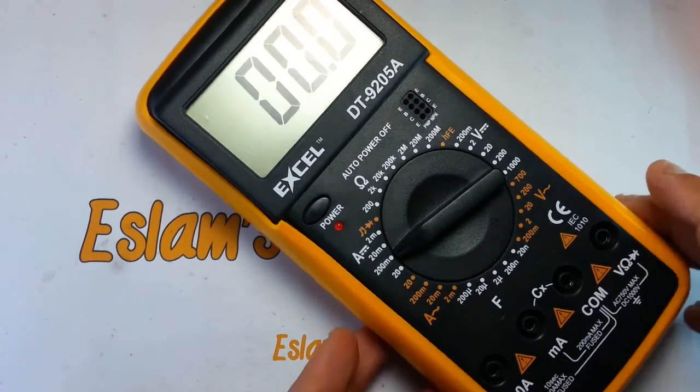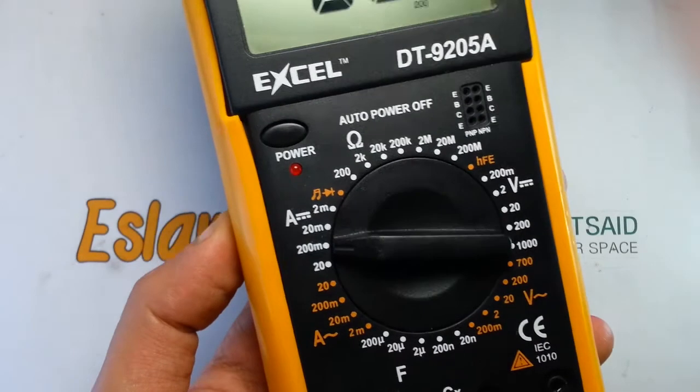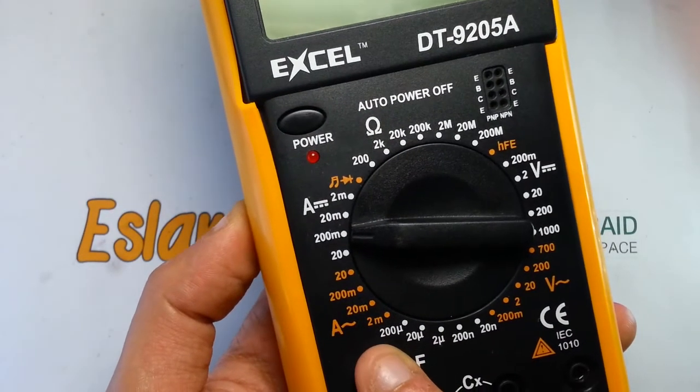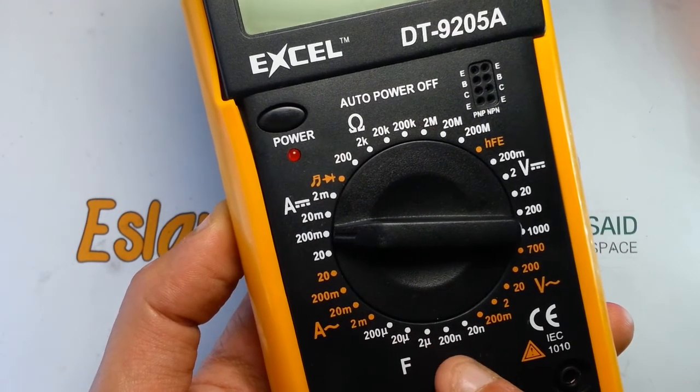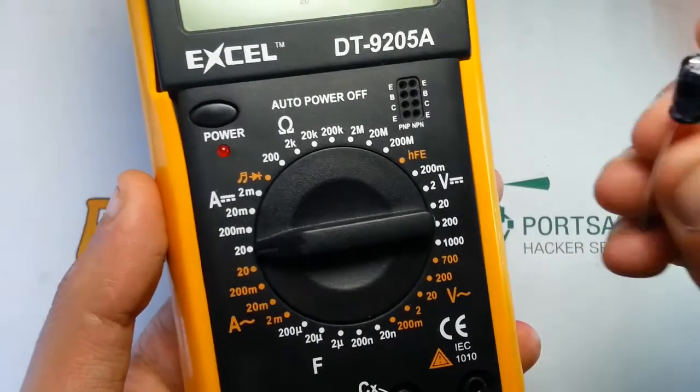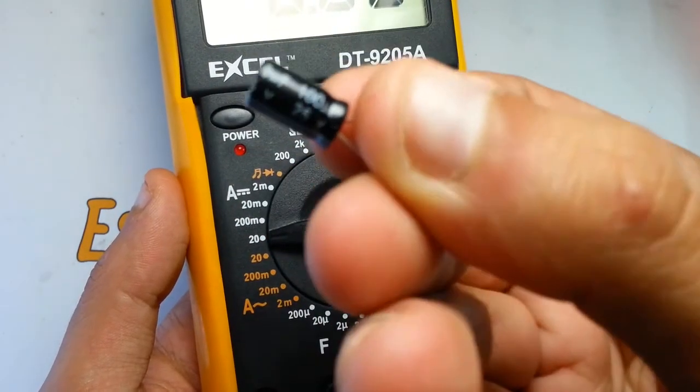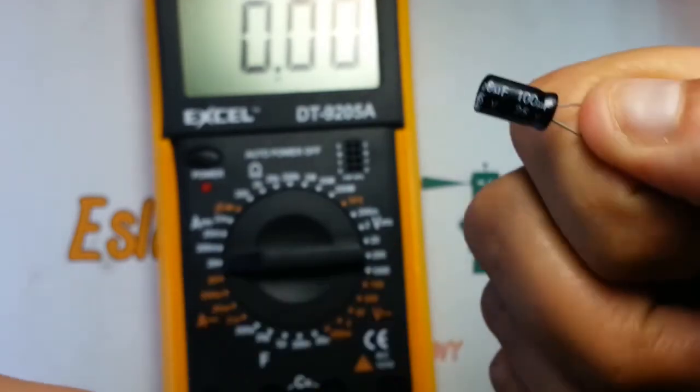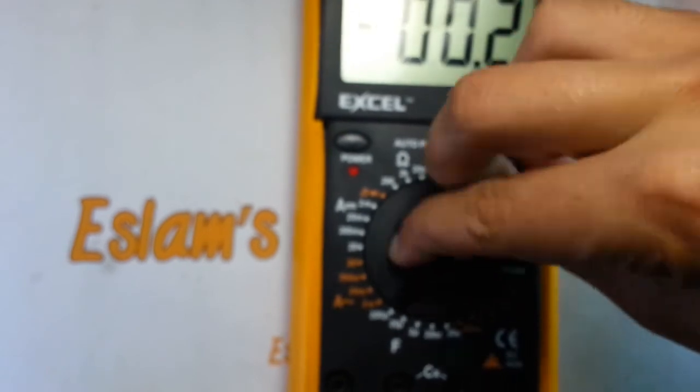This multimeter can also measure capacitance. Here on the cursor, you can see the highest value is 200 microfarads, then 20 micro, 2 micro, 200 nano, and 20 nano. Here I have a capacitor and I want to make sure the value is right or not. This capacitor value is 100 microfarads.